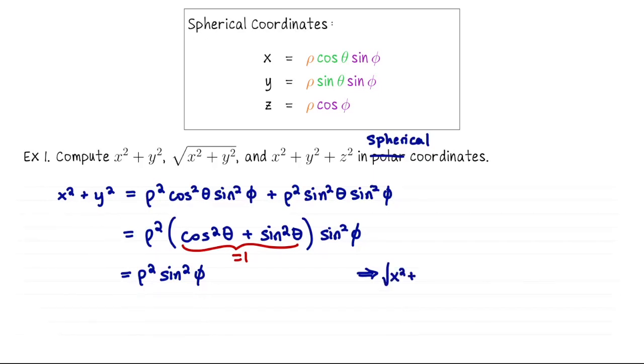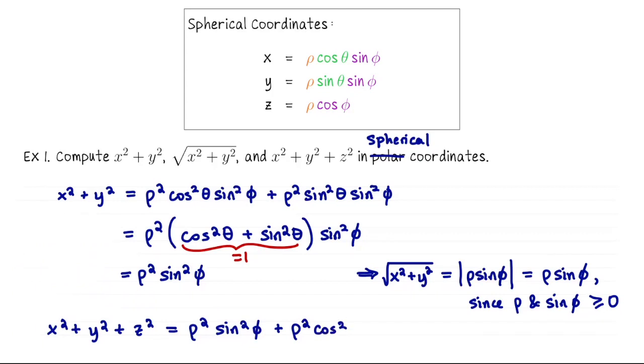So then if I were to take the square root of x² + y², that would be the square root of ρ² sin² φ. Normally the square root of a quantity squared returns you the absolute value of the quantity, but in this case the absolute values are unnecessary because ρ is non-negative and φ is between zero and π, so sin φ is always non-negative too. Okay, let's take x² + y² and add z² to it. From the above that's going to be ρ² sin² φ plus z² is ρ² cos² φ. So overall that's just ρ². In spherical coordinates, x² + y² + z² equals ρ², and that's exactly the equation of a sphere of radius ρ.